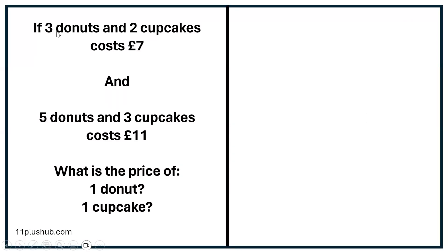But before we get there, let's talk about algebra. Now, this was very tough this week — it was very, very tough, and you have every right to be feeling confused. But don't worry, because with a bit of practice this is going to make more and more sense. So we've got a question here, and it says: if three doughnuts and two cupcakes cost seven pounds, and five doughnuts and three cupcakes cost eleven pounds, what is the price of one doughnut? What is the price of one cupcake?